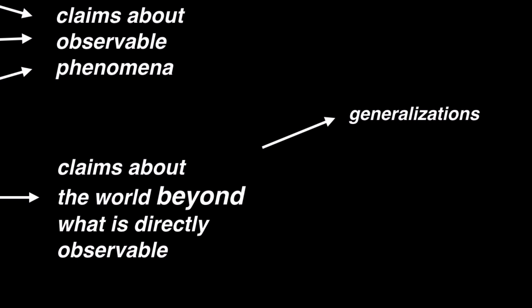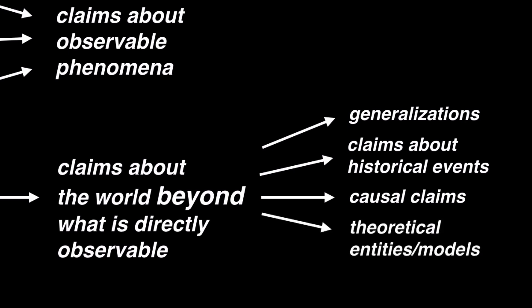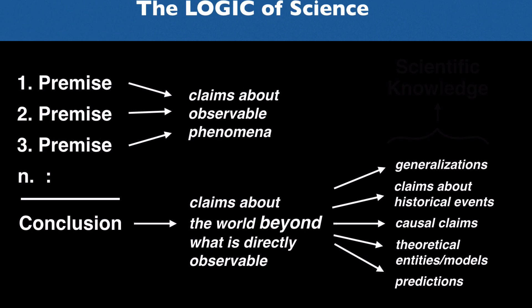Statements like this often express predictive regularities at the level of observable phenomena, but in generalizing, they go beyond what is directly observable by asserting something about all entities or processes within a particular category, even the ones that we haven't observed and may never observe. Other kinds of scientific claims that go beyond the empirical data include claims about historical events — what actually happened at some point in time that we cannot go back and observe directly — claims about causes, where we may observe that two variables A and B are correlated but to say that A is the cause of B goes beyond the mere correlation, claims about theoretical entities whose existence we posit as part of our scientific explanations but which may never be observable in any direct sense, and predictions of future behaviors or future events. Altogether, claims like these are what constitute scientific knowledge.